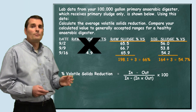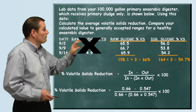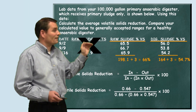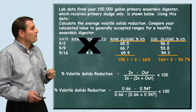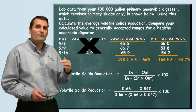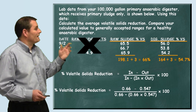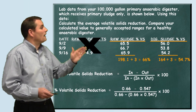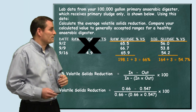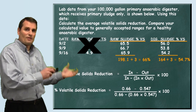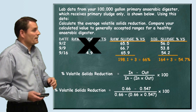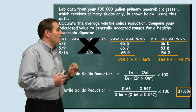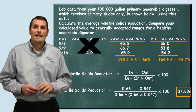Remember, we need to use the decimal form. So when we plug our numbers in, we use 60% as 0.60 going in, minus our 54.7%, which is written as 0.547. Then we divide that by 0.60 minus the quantity of 0.60 times 0.547. We multiply by 100 to convert our decimal into a percent. Once we do this math, we see that our percent volatile solids reduction is 37.8%.